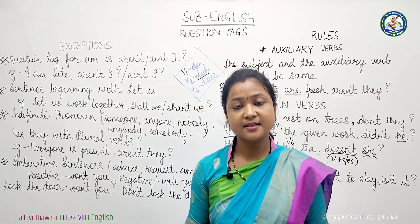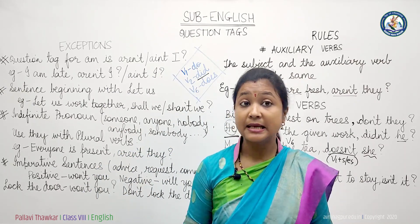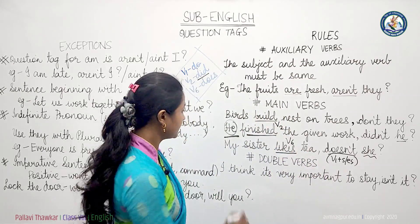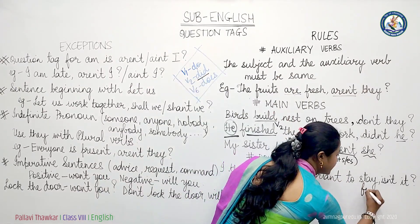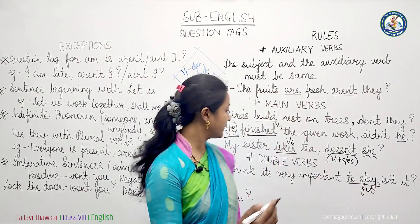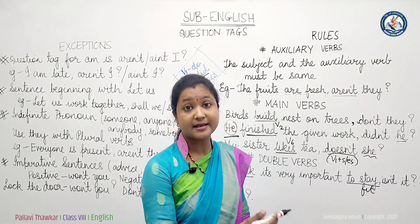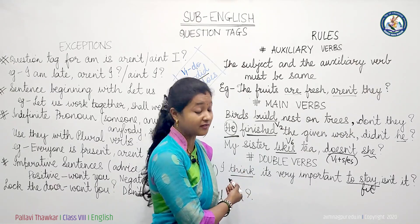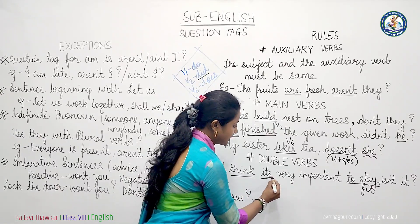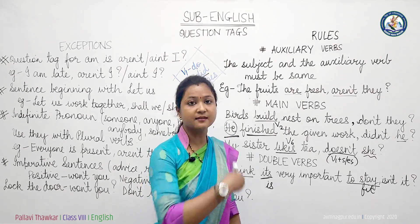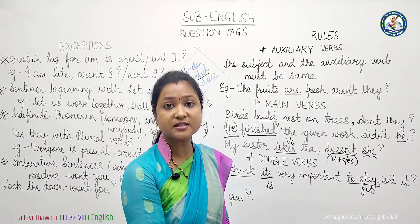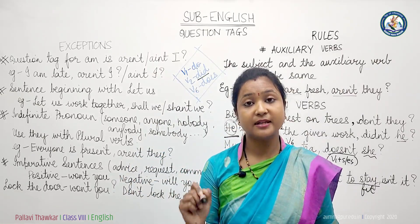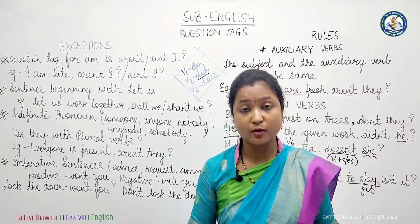Now, what if there are two verbs present in the statement? For example, 'I think it's very important to stay fit.' Here 'to stay' is an infinitive — we won't touch that. Then we see 'think' is the strong verb. 'Is' is the auxiliary verb given here, so since the statement is positive, we use the negative form: 'isn't it' becomes the question tag. We look at the strong verb and ignore the infinitive.